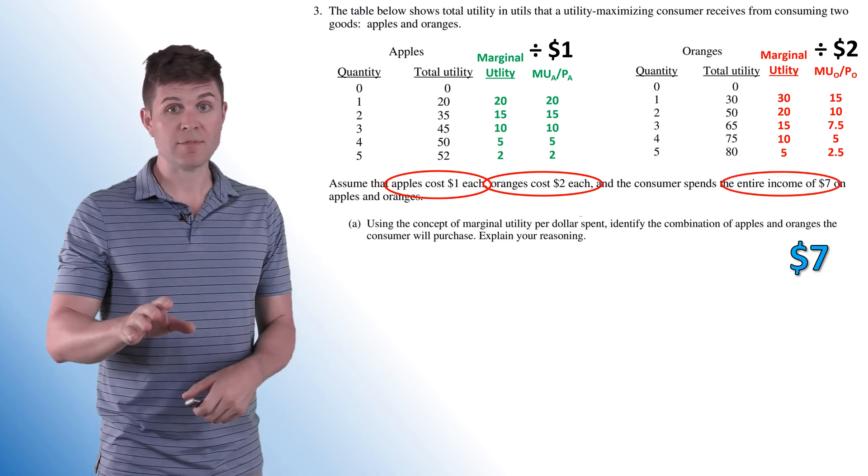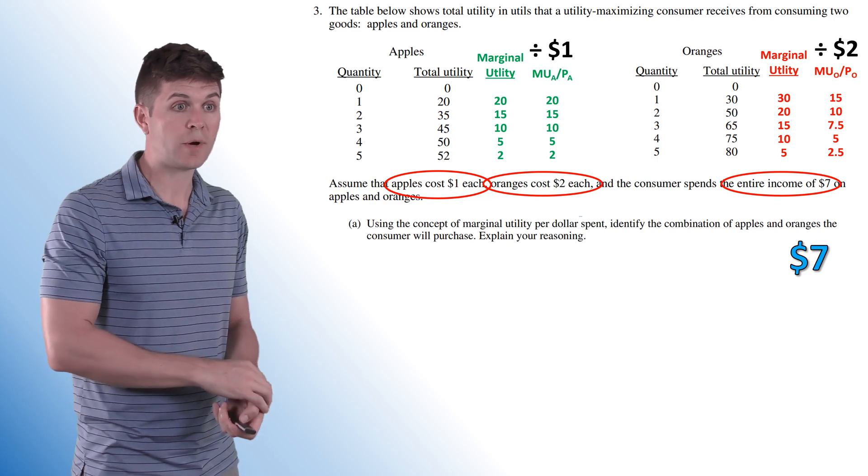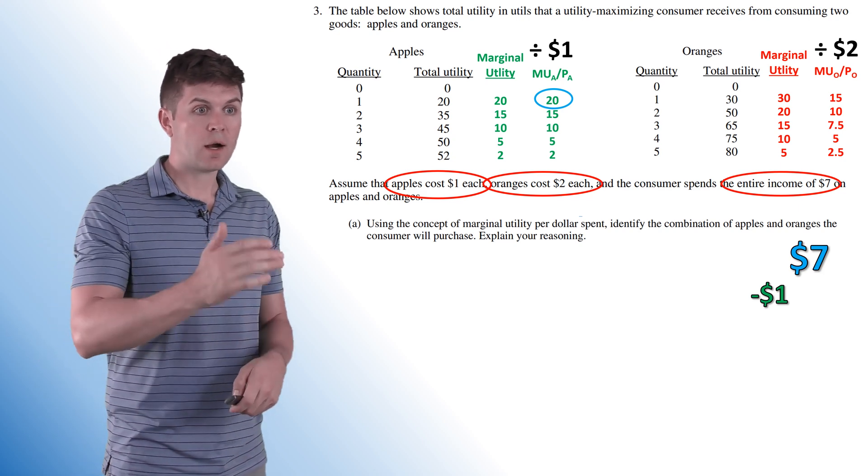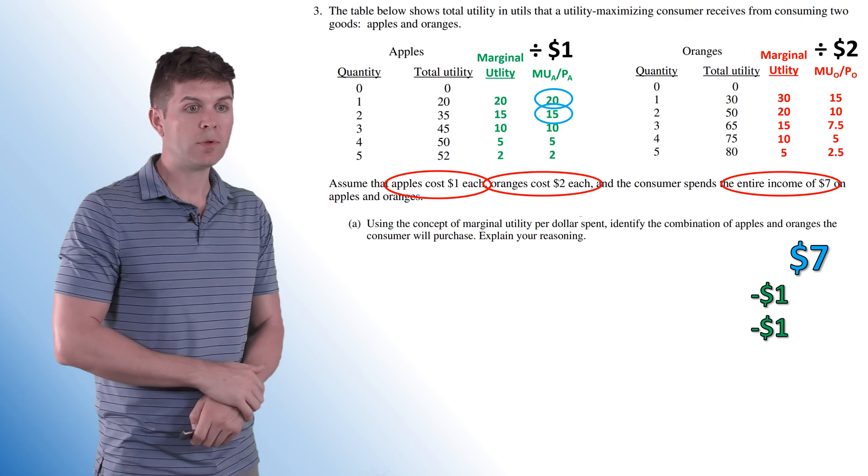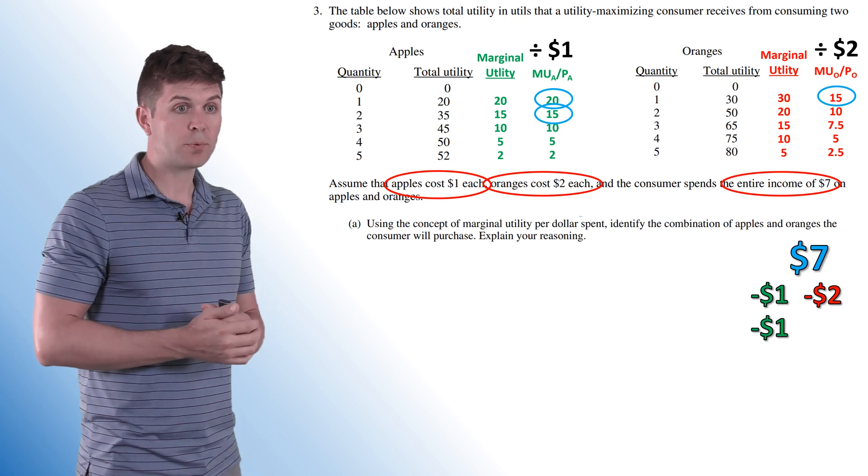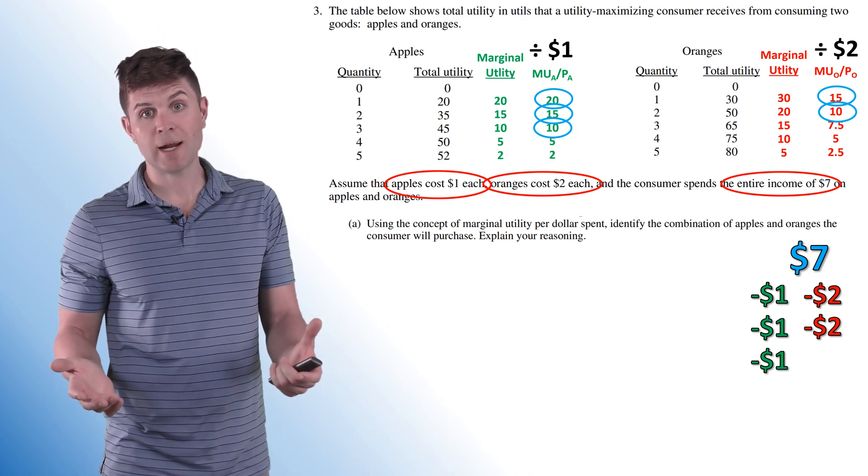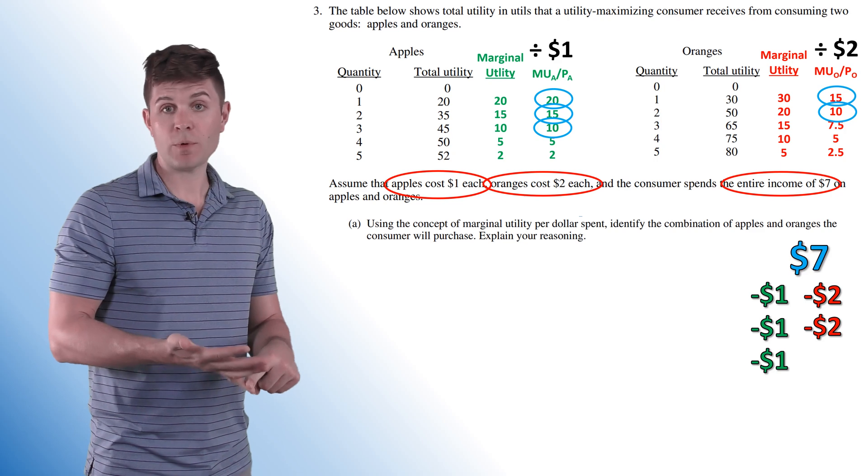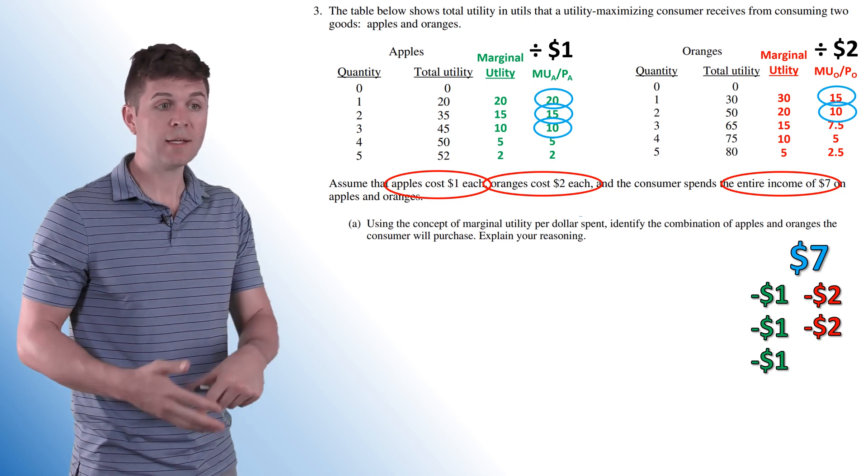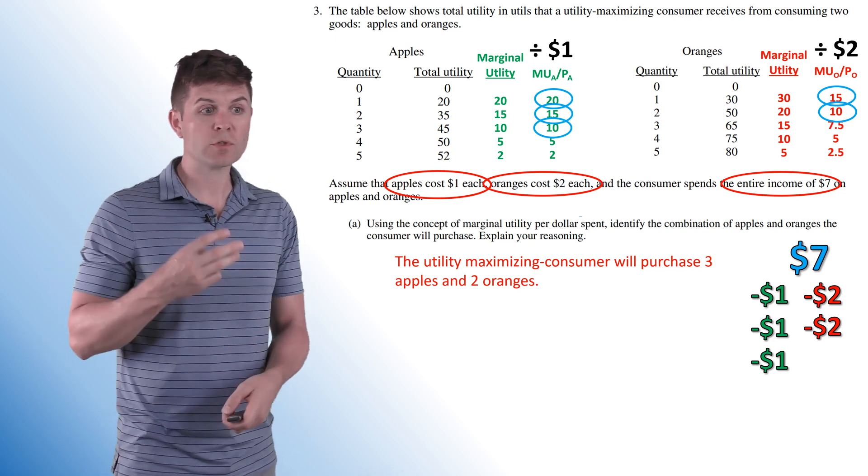So we are going to spend $7. We're going to spend the whole thing. So what are we going to buy first? In this case, we look at the marginal utility per dollar spent. The first one we're going to grab is an apple. It gives us 20 utils per dollar spent. So we just spent $1. Now 15 for an apple, 15 for an orange. We'll buy the apple and then we'll jump over and buy that orange. So we've spent $4 at this point. So I can get 10 utils per dollar spent from an orange, 10 from an apple. I'm going to go buy that orange first and then I'm going to jump back and buy that apple. At this point, we spent $7. The last unit of apples that we bought has a per dollar marginal utility of 10. The last unit of oranges we bought has a per dollar marginal utility of 10. So we have maximized our utility in this situation. So the utility maximizing consumer will purchase three apples and two oranges.